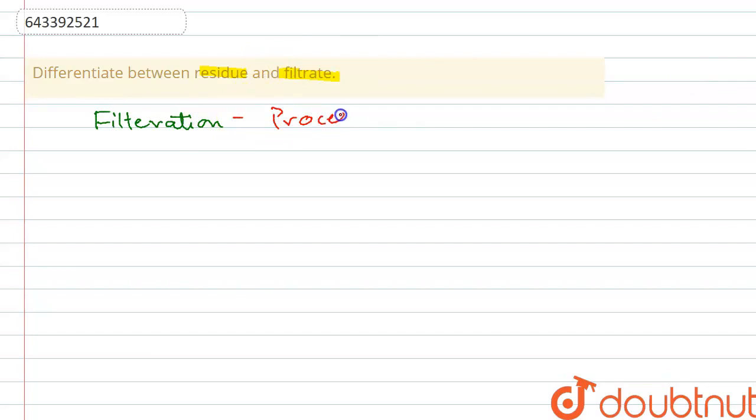So what is filtration? Filtration is the process of separation of a solid-liquid mixture using a sieve or you can say a filter paper.